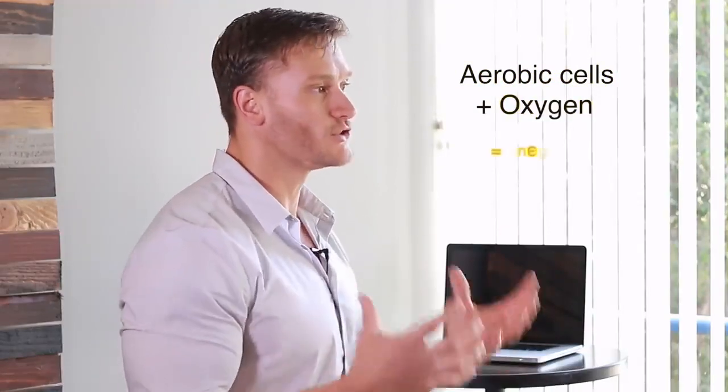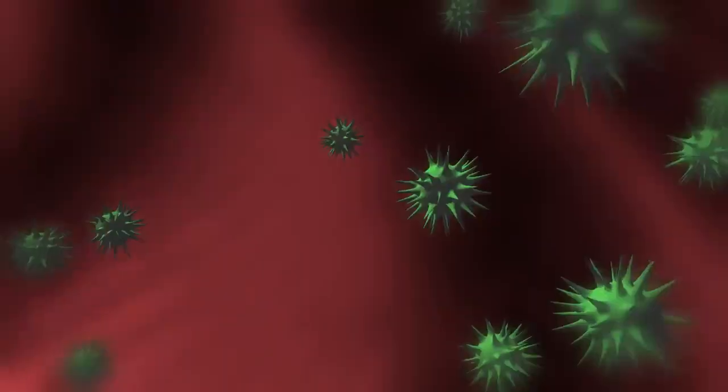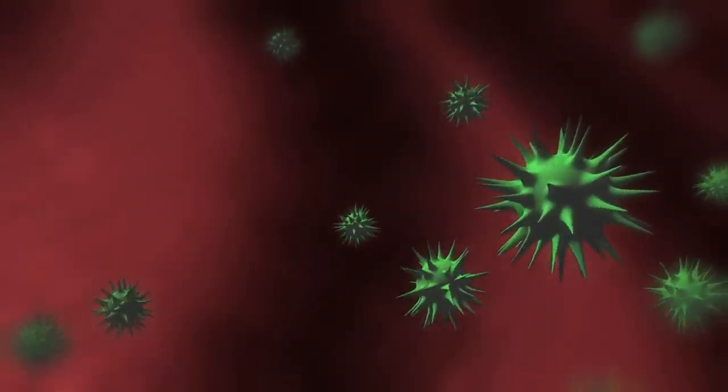We have aerobic cells in the body. Those aerobic cells combine oxygen with other components of the body to create energy. Whenever they create energy, they produce a certain level of cellular waste — aerobic waste, oxygen waste — specifically something called the reactive oxygen species, or ROS. In this video, I'm going to refer to glutathione as GSH and the reactive oxygen species as ROS.